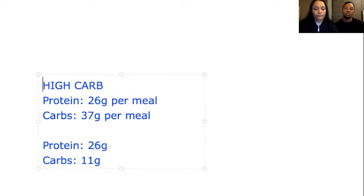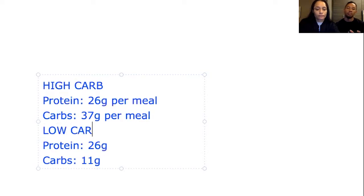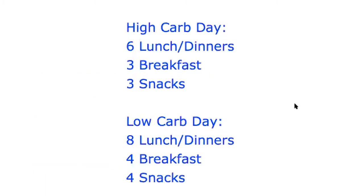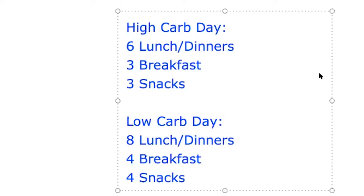Once you get those numbers, all you have to do is abide by them when you prep. Now we need to figure out how many meals to cook for the week. We've already worked that out for you: on your high carb days, you need to cook 6 lunch/dinner meals, 3 breakfasts, and 3 snacks. The breakfasts and snacks are easier and will fall into place once your lunches and dinners are planned.